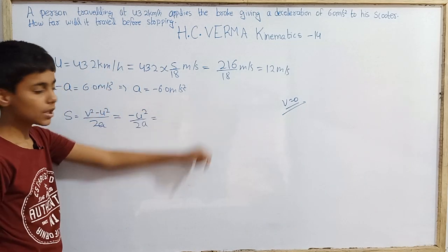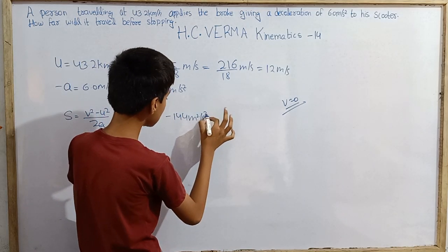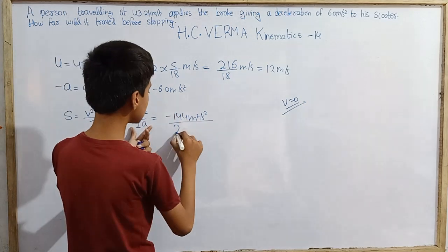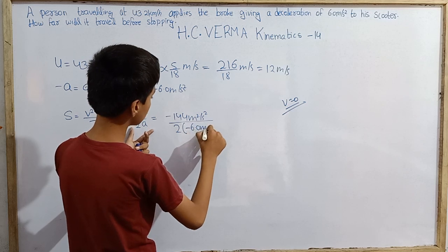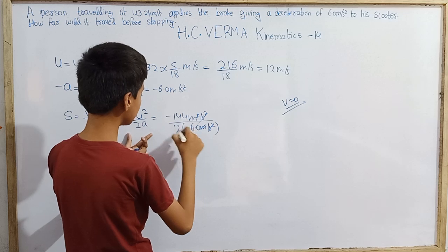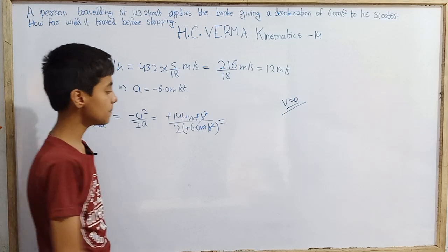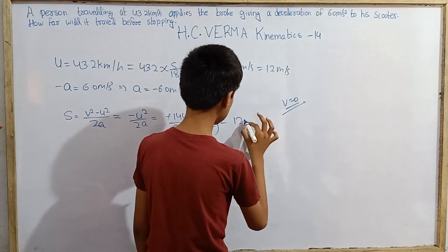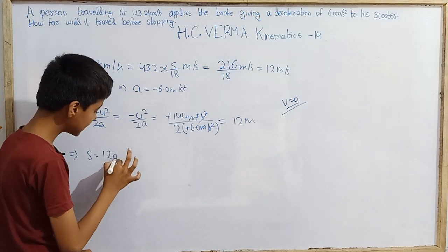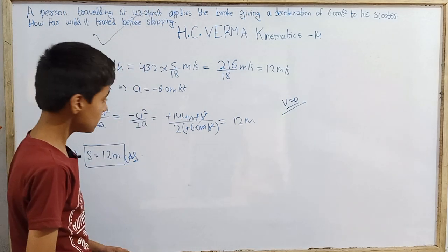U is 12 m/s, so U² = 144 m² per second square. Therefore S = −144 / (2 × −6.0) = −144 / −12 = 12.0 meters. The minus signs cancel, giving a positive distance. So the distance travelled by the scooter before stopping is 12 meters.